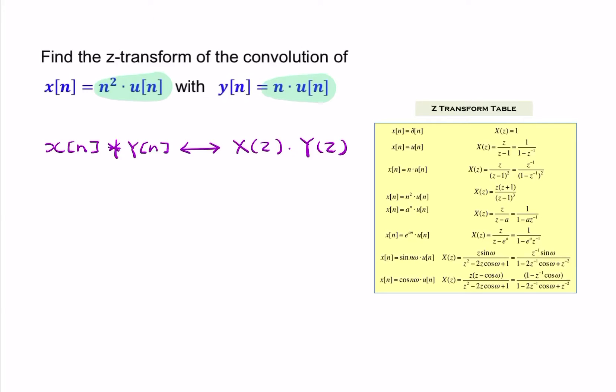You multiply X of Z times Y of Z. Now my task is to find X of Z and Y of Z. We can do that by looking at the table. We're looking for something that looks like n-squared u of n.